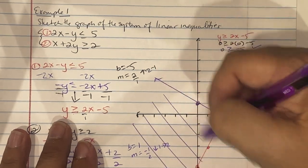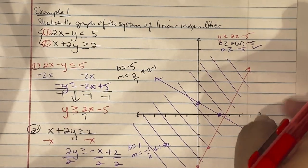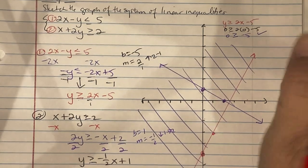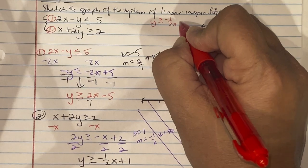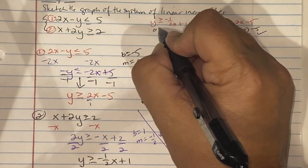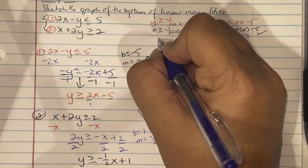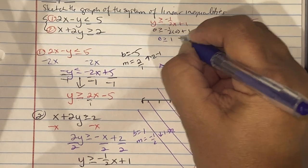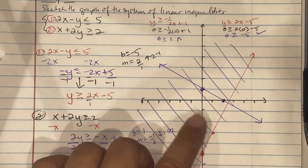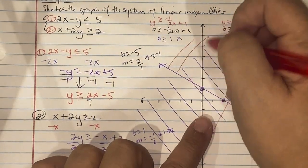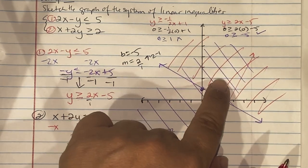For the second equation, y ≥ −(1/2)x + 1: replace with zero zero, giving 0 ≥ 1. That is a false statement, so (0, 0) is below the second line, which means we need to shade above it as well. The checkered pattern where the two shaded regions overlap is where your solutions are.